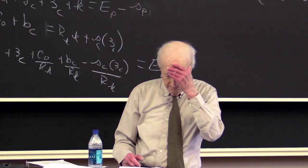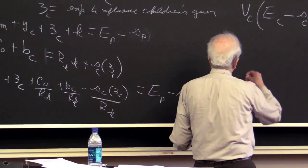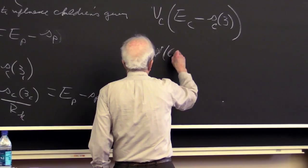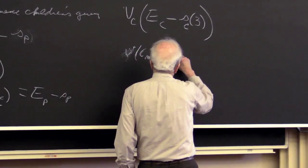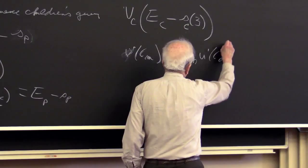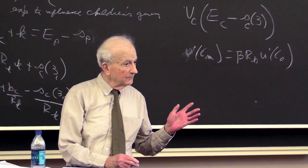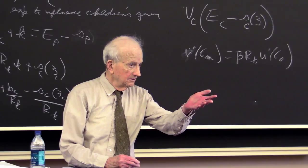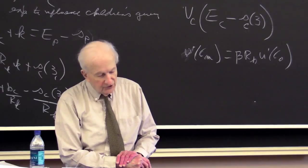What happens with the first order conditions for CM and CO? We get U prime of CM equal to beta times RK times U prime of CO — that's the basic condition. For Y, we assume you're not at a corner with Y — the rate of return on Y is so high that you're always going to have some positive investment.